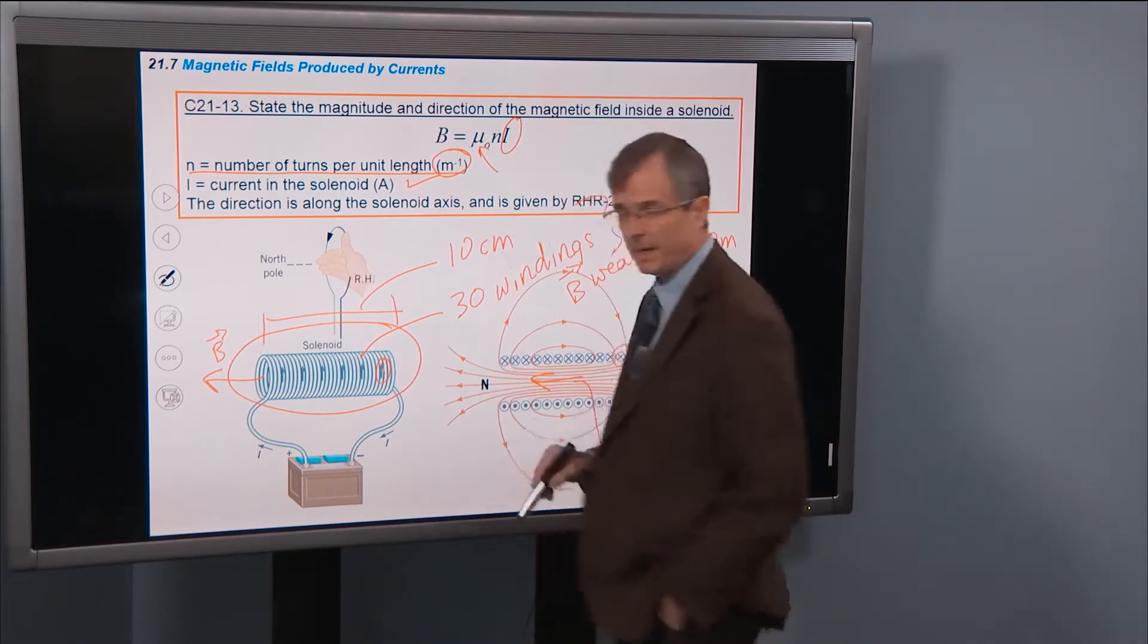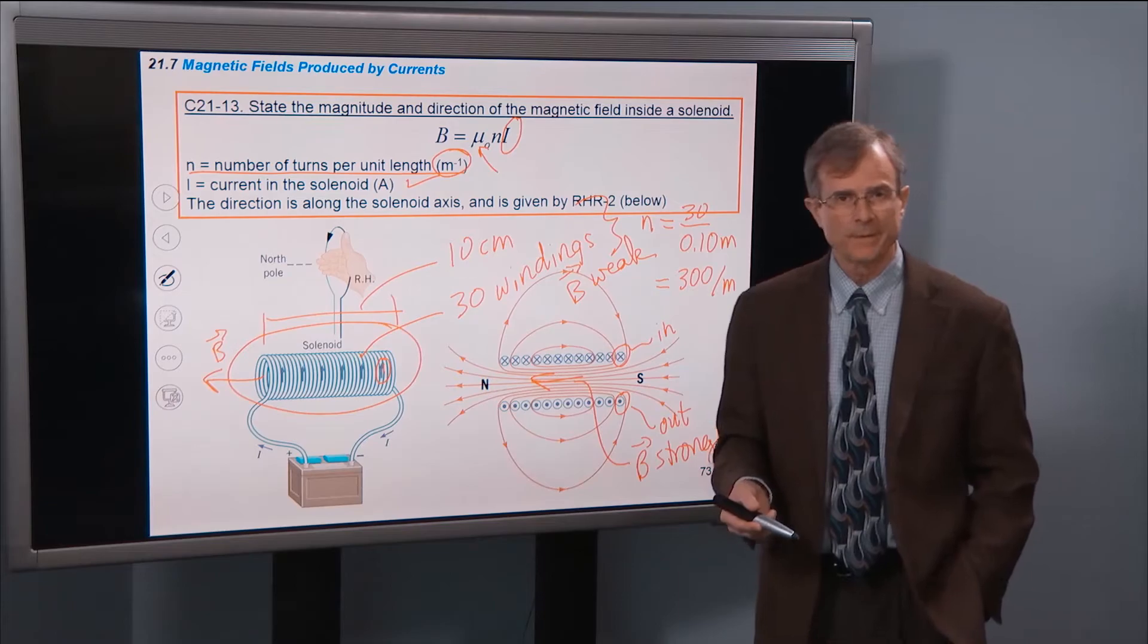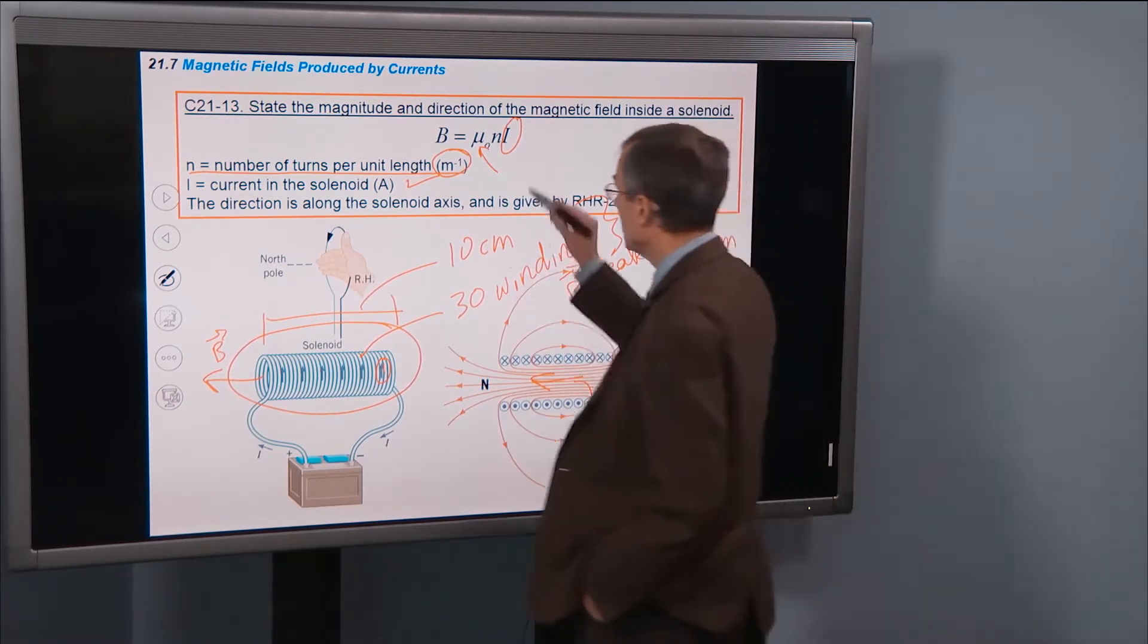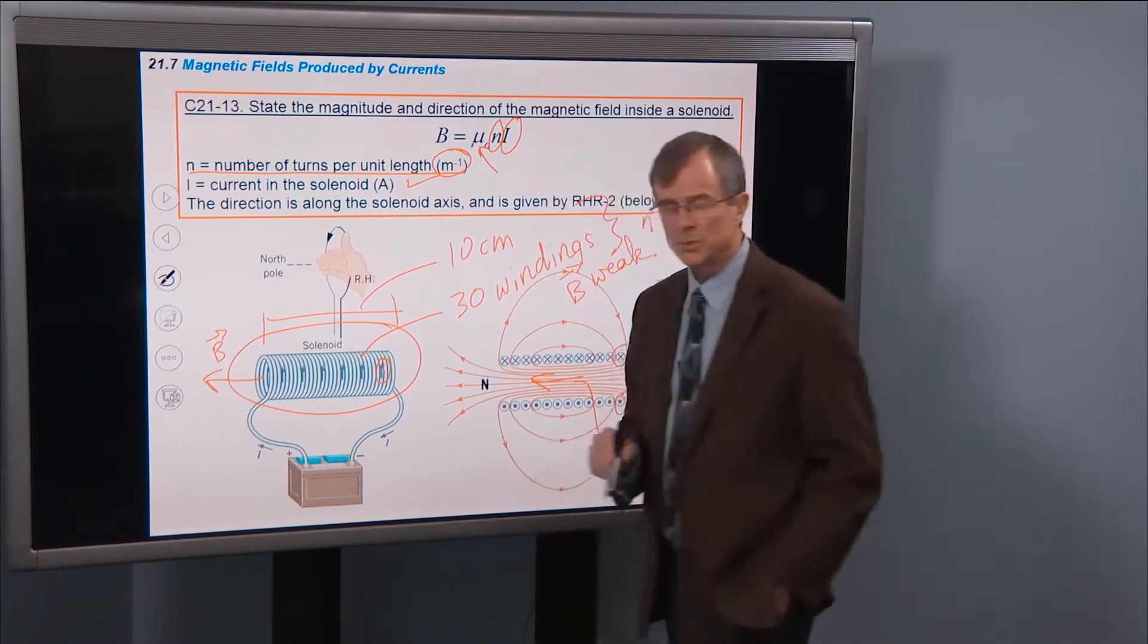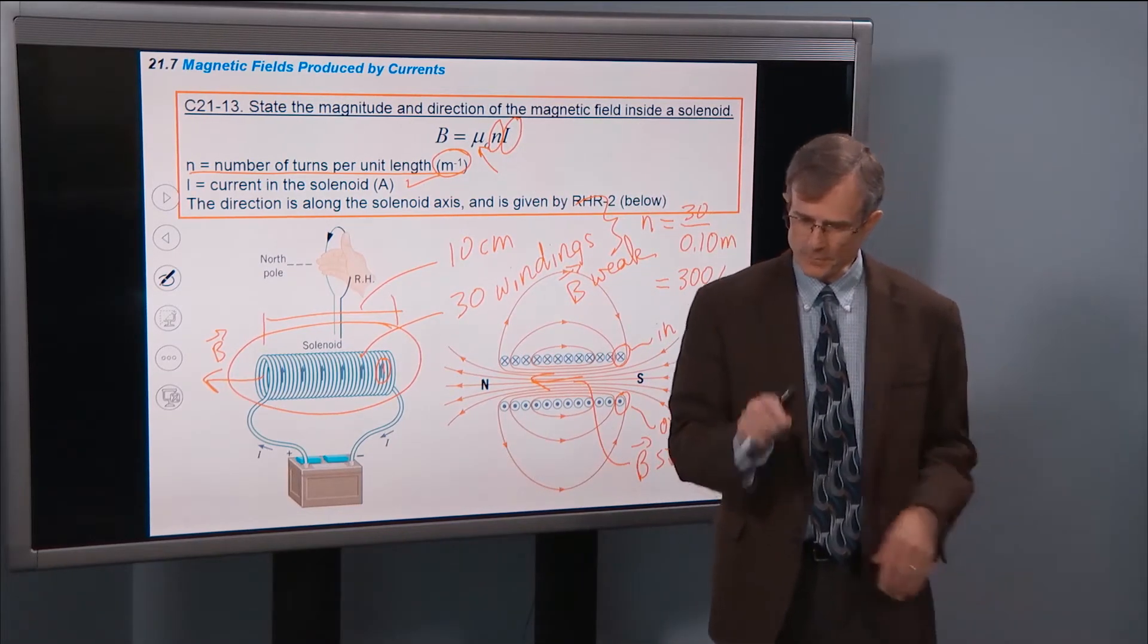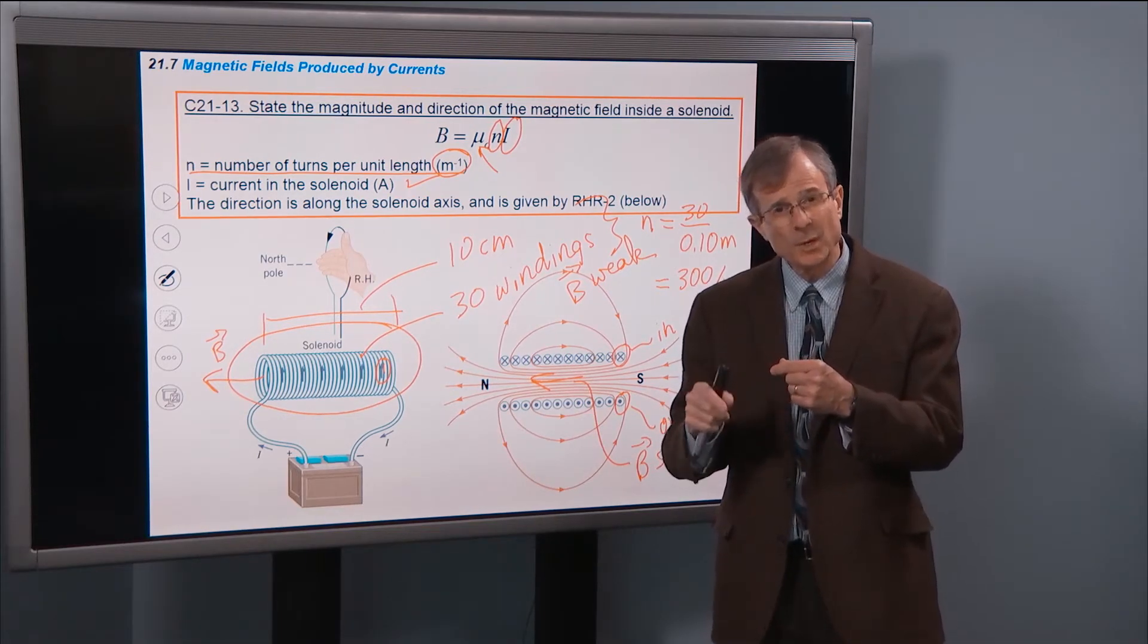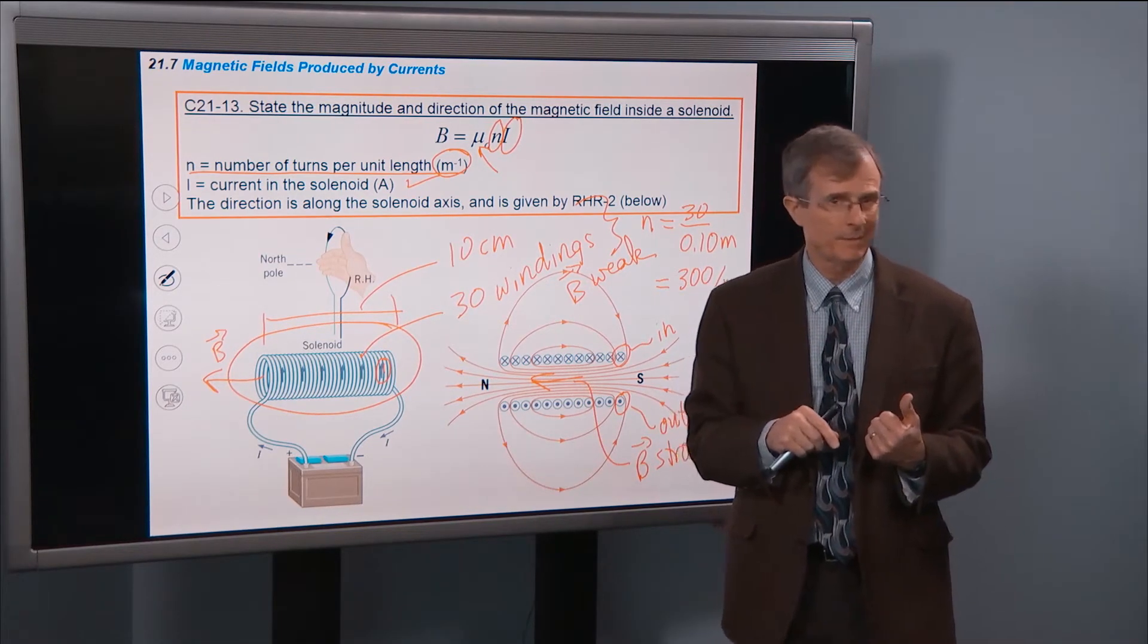And so if you want a strong magnetic field inside of a solenoid, then there's two ways to get it. You can put a strong current in there, put a lot of current in those windings, or you can use a really thin wire so that you can fit a large number of windings per unit length in it. Or you can actually use a thick wire and then stack the windings on top of each other to increase the magnetic field inside of that solenoid.